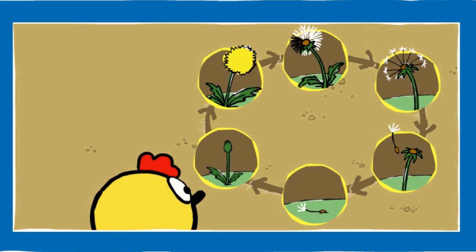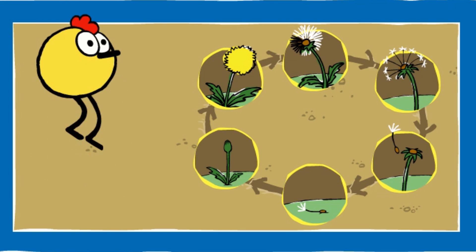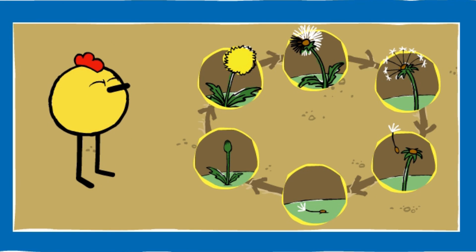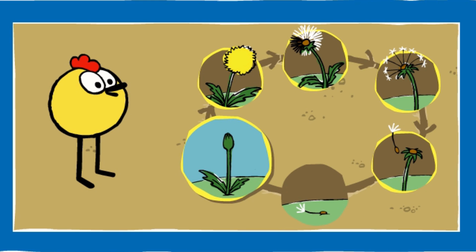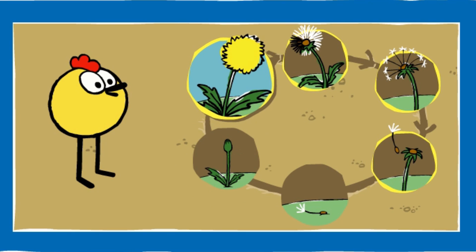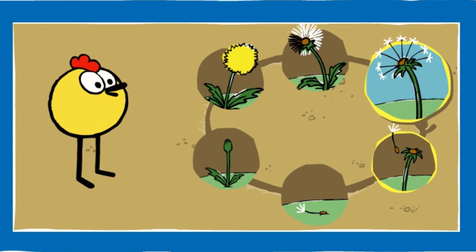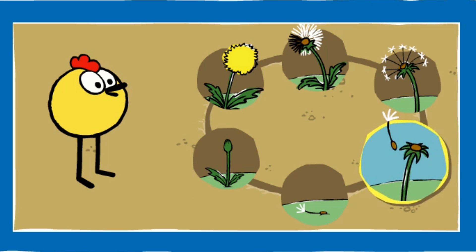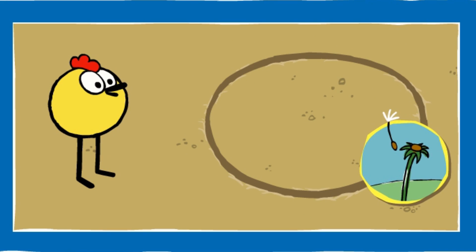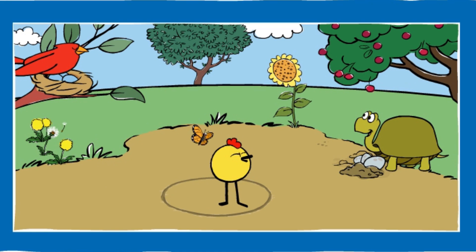Nice job! All the pictures are in the right order. This is how a dandelion grows and changes over time. A dandelion seed gets buried in the dirt. With water and sunlight, up sprouts a dandelion plant. A flower blooms. After the flower blooms, seeds form. The seeds loosen from the plant. Finally, the seeds blow off the dandelion and land in the dirt.